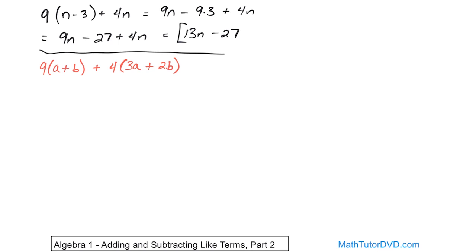Again, we can't really add a plus b. Those are unlike terms. We can't really add 3a plus 2b. Those are unlike terms, but we can distribute the 9, and we can distribute the 4. So let's go ahead and do that. 9 distributed is going to...